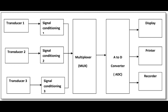A block diagram of a PC computer-based data acquisition system is shown in the figure. It consists of individual transducers and sensors for measurement of physical plant parameters, such as temperature, pressure, flow, etc.